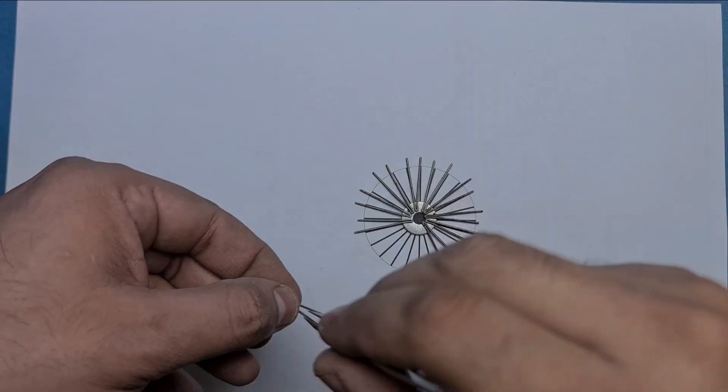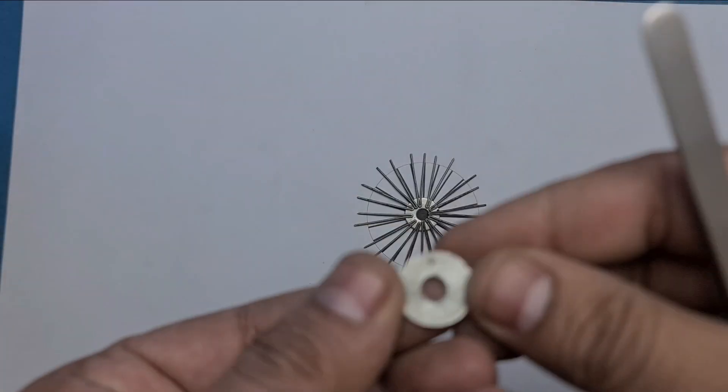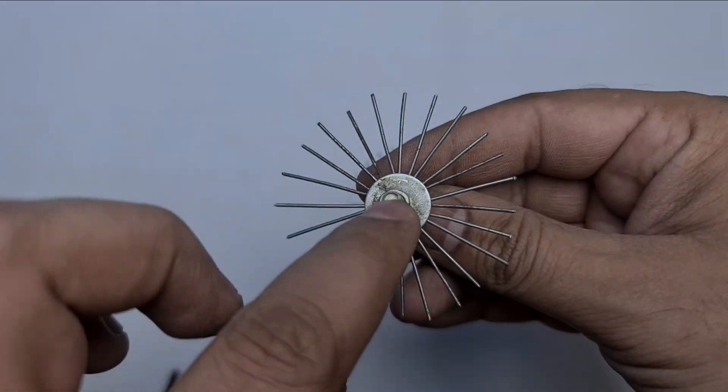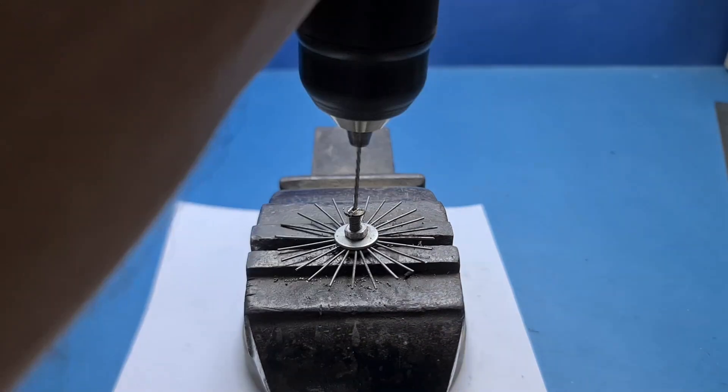We will now use a bolt to tighten the washers so that all the wires are kept in place. Now drill holes on both sides of the bolt.